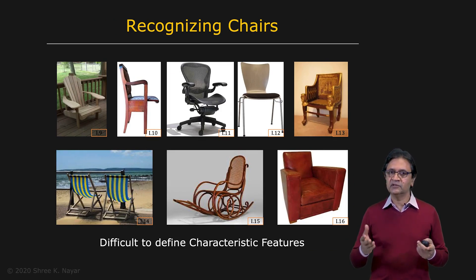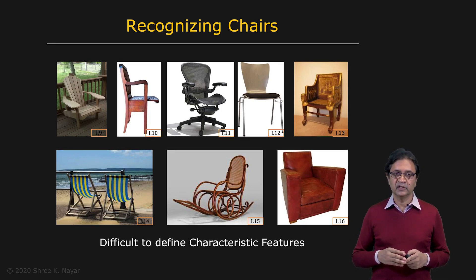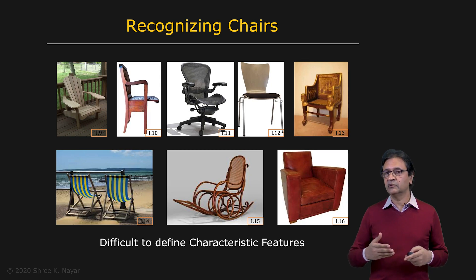All of these chairs that you're looking at have the same function, but very different forms, as a result of which they have very different appearances in images, very different three dimensional geometries. How do we so easily recognize chairs? Again, a very complex mapping.